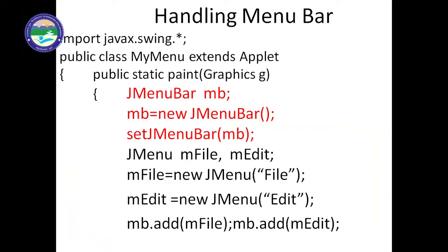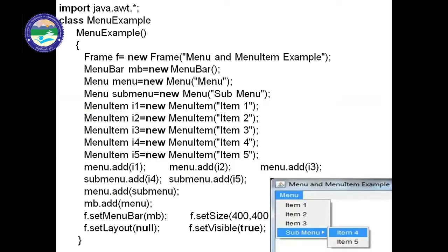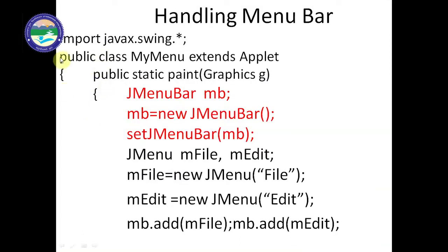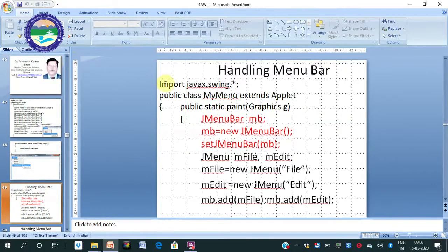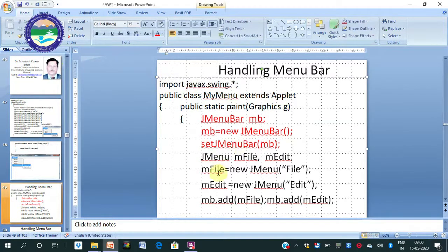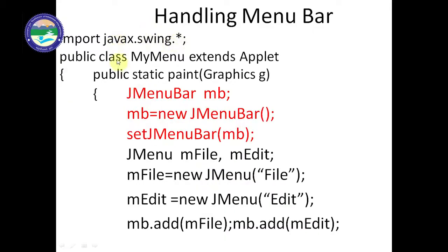Now here is another example of menu bar using JavaSwing with an Applet. In the previous example we used AWT (import java.awt.*), where classes are Menu, MenuBar, MenuItem. In Java Swing, we use a 'J' prefix: JMenuBar, JMenu, JMenuItem. For Swing, we write: import javax.swing.*. The class MyMenu extends Applet.